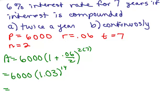Make sure you never round until the end of the problem. So, I come up with $9,075.54 when it's rounded. Now let's do it continuously.